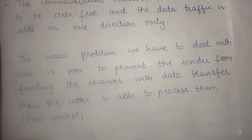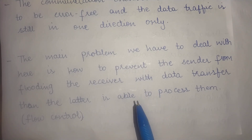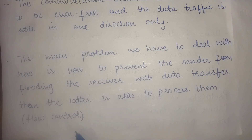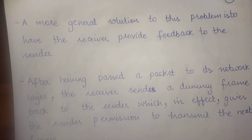We have dropped the assumption of infinite processing capability and infinite buffer space for the receiving data link layer. With restricted buffer space and limited processing capability, we must send data packets at a rate so the receiver is not swamped. Dealing with how to prevent the sender from flooding the receiver so it can process packets is known as flow control — a feature of the data link layer.